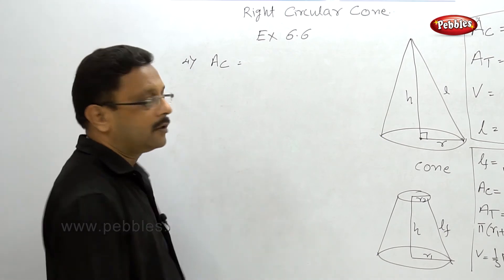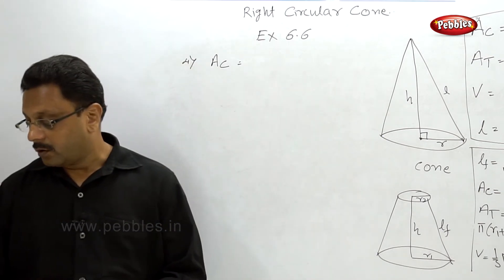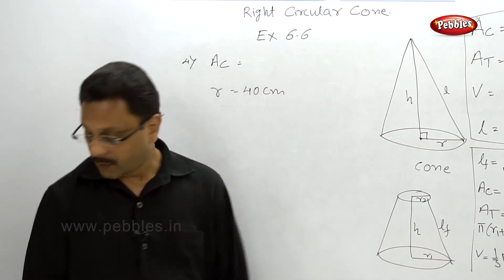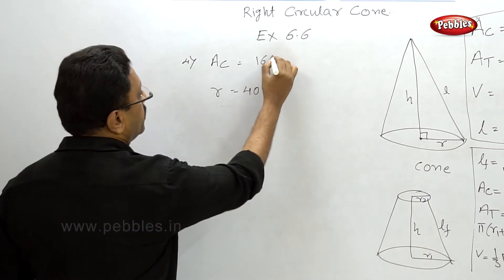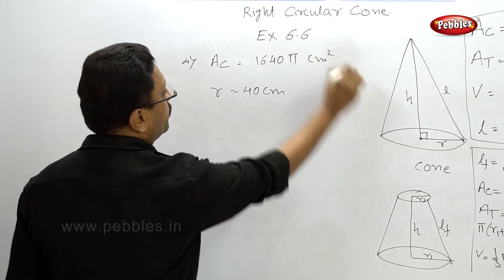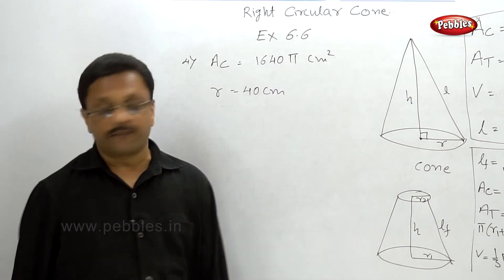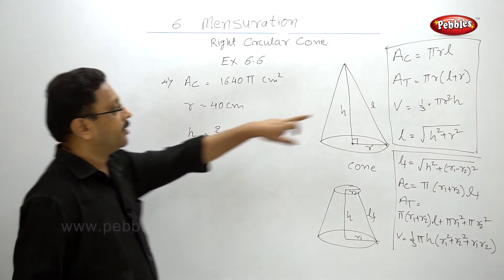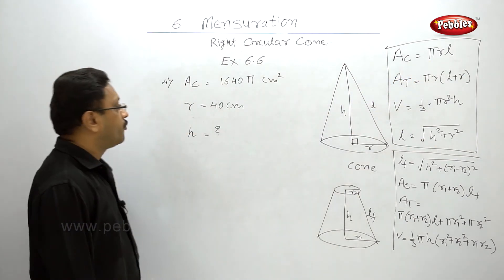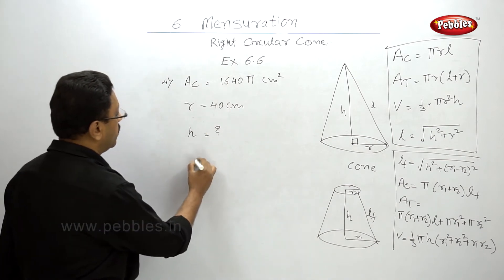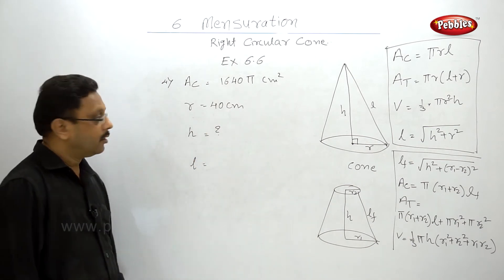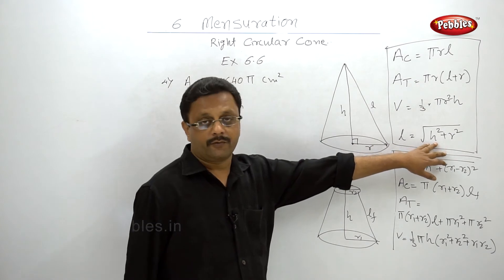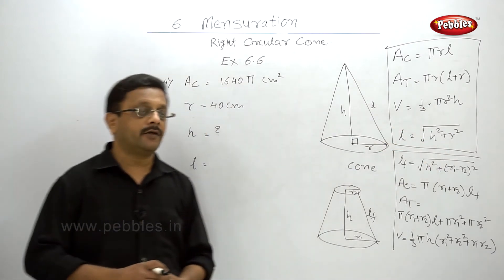The fourth example: the curved surface area of a cone with base radius 40 centimeters is 1640π cm². Find the height of the cone. The curved surface area is πrl, so from this you can find l. Then substituting l and r into the Pythagorean formula, you can find the height of the cone very easily. Please pause your video and solve this example.